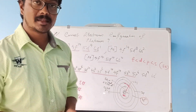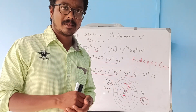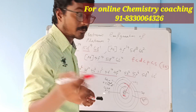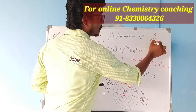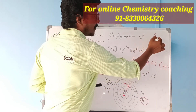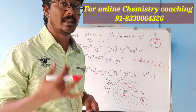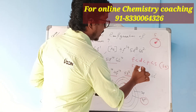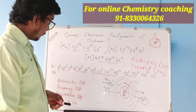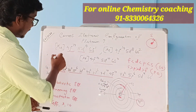Penetration effect refers to how close a sub-shell is to the nucleus — the closer the sub-shell, the more the penetration effect. This also depends on shape. For the s sub-shell, which is spherical, electrons are very close to the nucleus and nuclear attraction is very high. The order of penetration effect is: s greater than p greater than d greater than f.